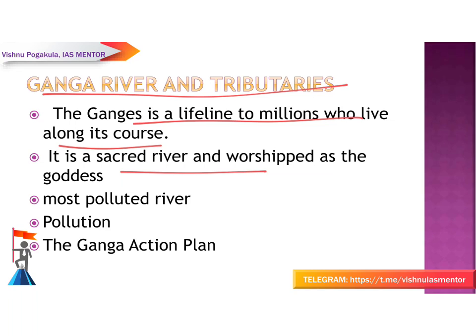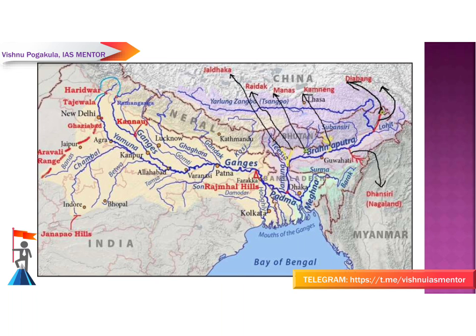This river originates as Bhagirathi from the Gangotri glacier and joins with the Alaknanda river at Devaprayag. From Devaprayag, this river is called Ganga. It was the fifth most polluted river in the world in 2007, and pollution threatens many species of aquatic and amphibian life, including the endangered Ganges river dolphin. The Ganga Action Plan is an environmental initiative to clean up the river.